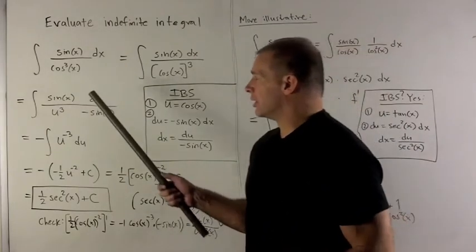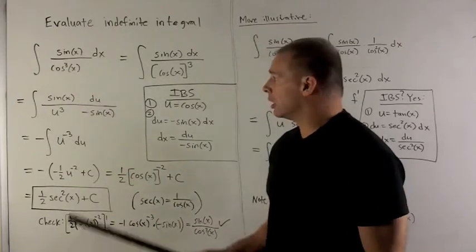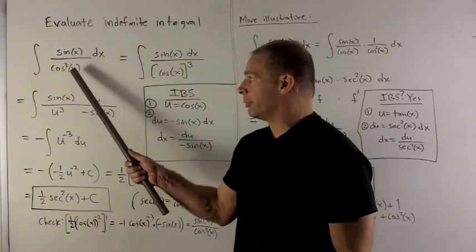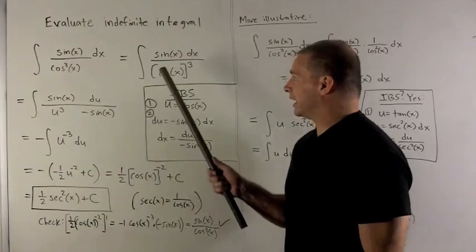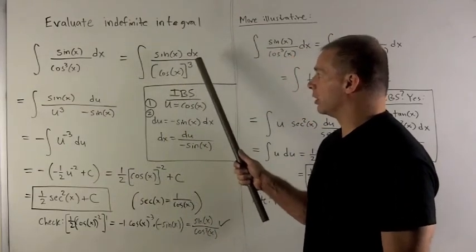Notice we have notation for cosine to a power. We don't put the power on the outside, we put it over the cosine just so we don't confuse it with what's in the parentheses. So this is really sine x dx over cosine x whole thing cubed.